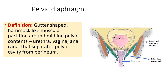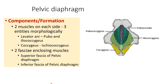The pelvic diaphragm has a lateral wall formed by the obturator internus muscle. The pelvic floor is formed by the levator ani muscle and one more muscle known as the coccygeus. These two muscles form the pelvic diaphragm. The components contributing to the formation of the pelvic diaphragm are two muscles on each side and two fasciae enclosing the muscles. The two muscles are the levator ani and coccygeus.